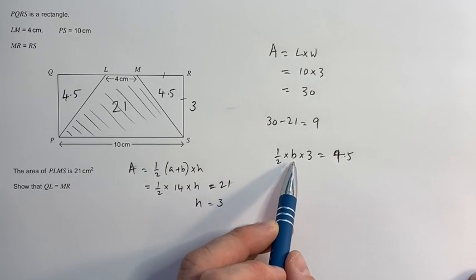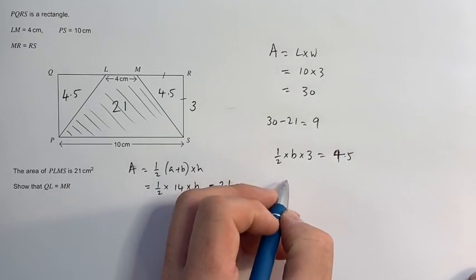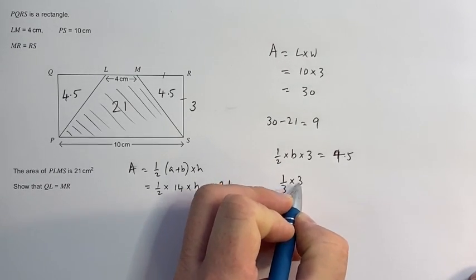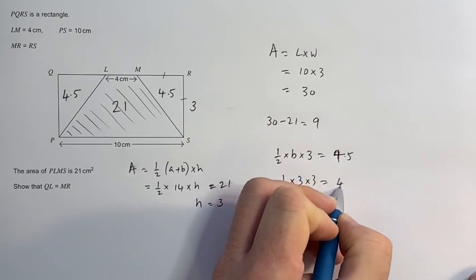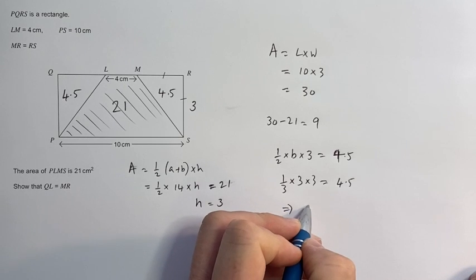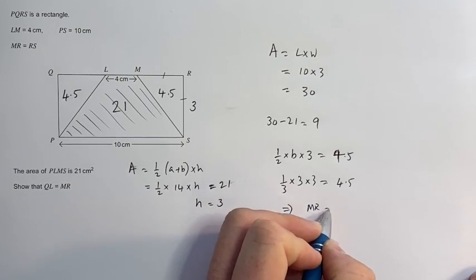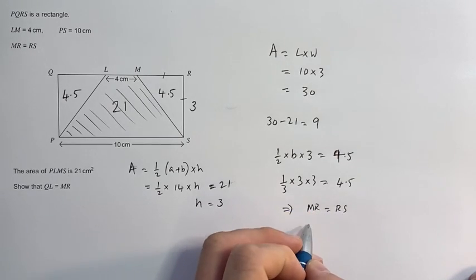So if I put B as 3, that works, which implies that the base MR should equal RS. And likewise,